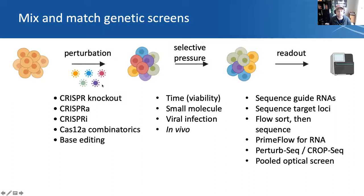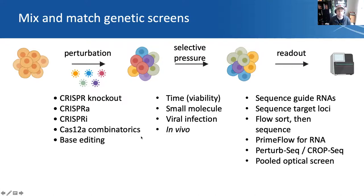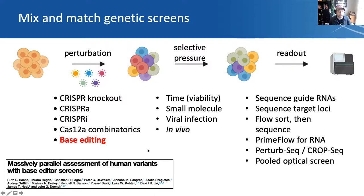The great part about these genetic screens is that you can really mix and match all the different parts of the perturbation, the selective pressure, and the readout. Conventionally, CRISPR screens were done by knockout, but there have been many developments since — CRISPR activation, CRISPR-i, a whole bunch of other ways of regulating genes epigenetically. Cas12a has been developed for screens and works particularly well for combinatorics. And then finally, base editing.